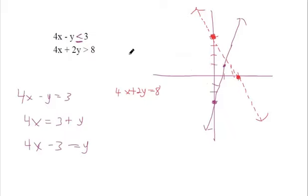If I plug in 0 in for x and 1 in for y in this top inequality, I get 0 minus 1 is less than or equal to 3. Is that a true statement? Yes, because negative 1 is less than 3. So it works for this one. Let's see if it works for this bottom one because it's got to work for both. If I plug in 0 in for x and 1 in for y, that's a false statement because this is going to be 2 and 2 is not greater than 8.